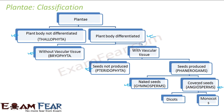Angiosperms — those with covered seeds — were again divided into two types called dicots and monocots, based on the number of seed leaves they have. So this is broadly the classification of the plant kingdom based on similarities and dissimilarities between different types of plants.